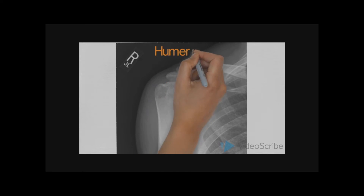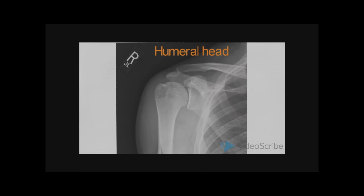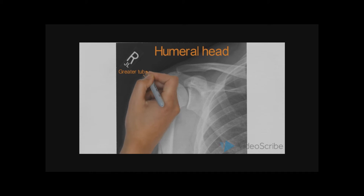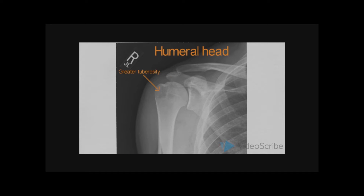Then we move on to assessing the humeral head, or epiphysis. First, we assess the general alignment with the glenoid cavity. Then we assess the greater tuberosity. We then look at and identify the lesser tuberosity, and we also assess the articular surface of the humeral head.